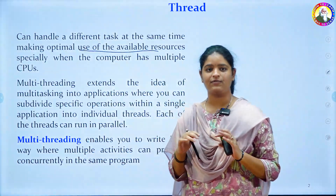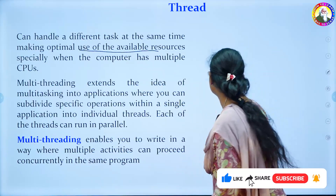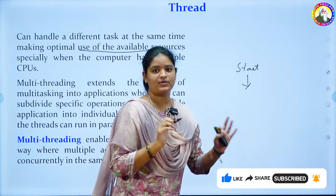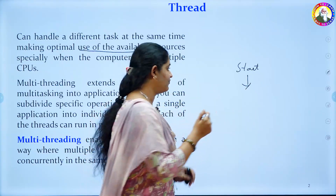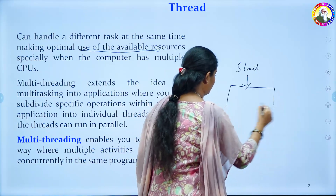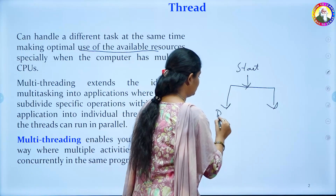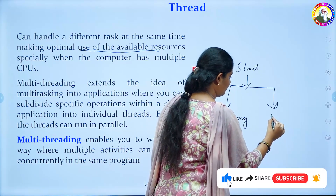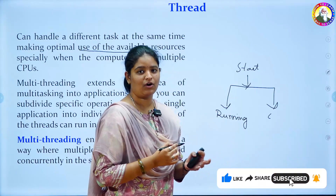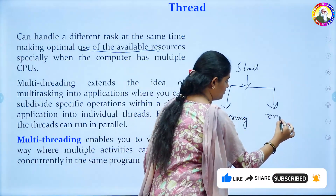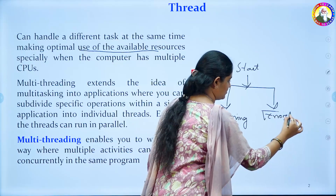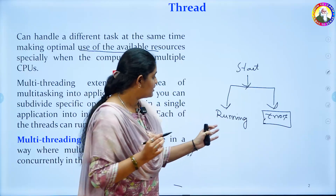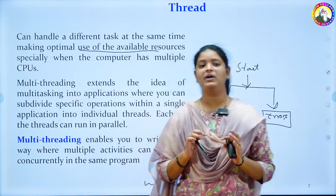If you want to use one thread for multiple devices, something like starting a program — if you want to run n number of threads, like n number of programs, you can get errors like it is not running or the file is not found. You have to handle any errors, something like exception handling. In multi-threading, you can use multiple threads.